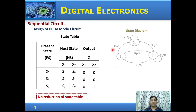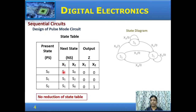Now let us get the state table from the state diagram, showing present state, next state, and outputs for inputs x1 and x2. There are three present states s0, s1, s2. When in state s0, an input of x1 goes to state s1, and x2 remains in s0, both with output 0. From s1, if x2 occurs it goes to state s2 with output 0. The state table is filled from the state diagram, and we observe there are no two similar states, so there is no reduction of the state table.